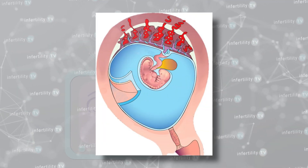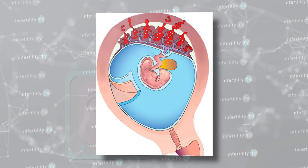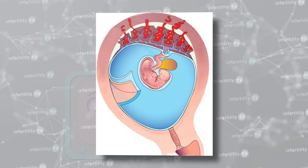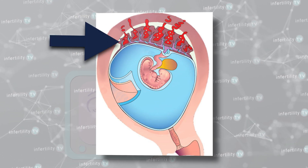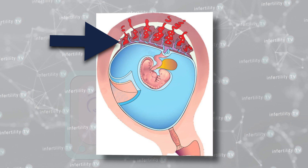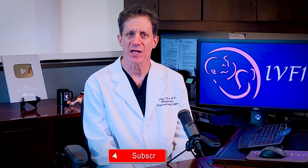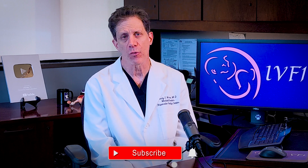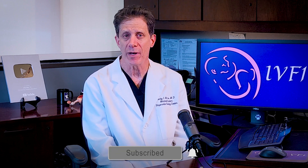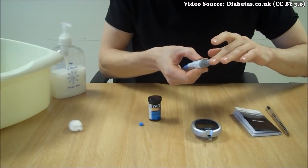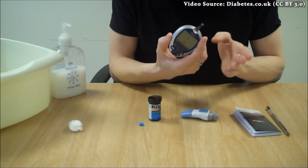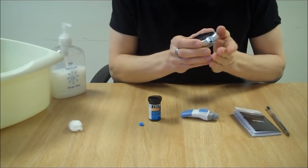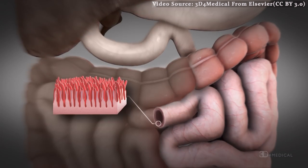Other blood tests that are commonly done look for several problems which can increase the risk for blood clots in the tiny blood vessels of the uterus. Some of the tests are for genetic mutations, and some look for imbalances in the compounds that normally maintain the balance between bleeding and clotting. Another group of tests looks for systemic diseases like uncontrolled diabetes and celiac disease.